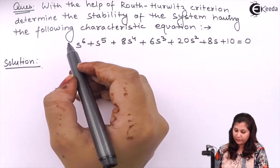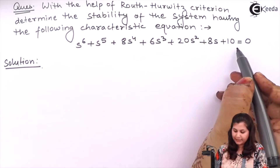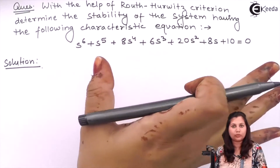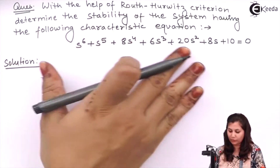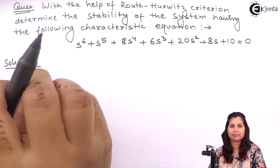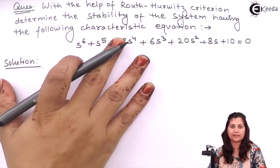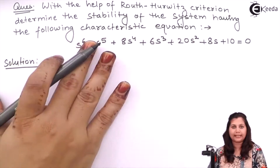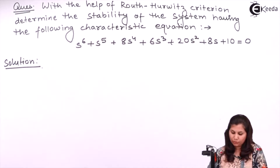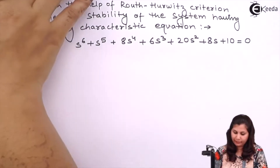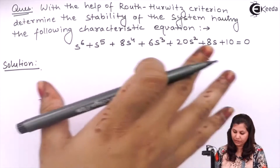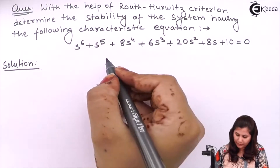If you see this characteristic equation, you will see that all the coefficients are present. None of the coefficients is missing or absent from this characteristic equation. So let us first determine the Routh-Hurwitz array using this characteristic equation.